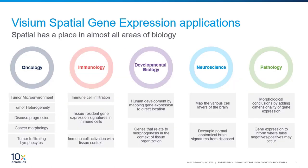Visium Spatial Gene Expression Solution can be applied in a multitude of research areas including Oncology, where you can study tumor morphology, heterogeneity, and microenvironment. Immunology, where you can look at immune cell infiltration and activation with tissue context. Developmental Biology, where you can map gene expression to biological structures. Neuroscience, where you can map the various layers of the healthy and diseased brain. Pathology, where you can aid morphological conclusions by adding the dimension of gene expression. And also cardiovascular biology and beyond.